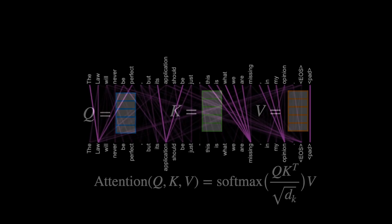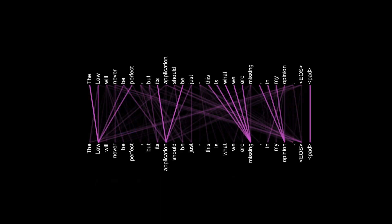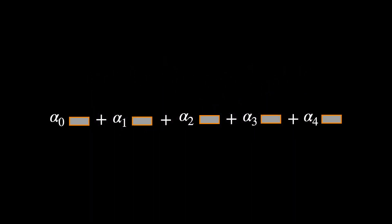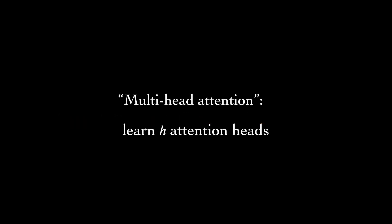One neat thing is that attention is somewhat interpretable, because we can actually look at the learned attention weights. These might correspond to the syntactic or semantic structure of a sentence. Now, if we only use a single attention head, the linear combination of value vectors leads to a kind of averaging effect that limits the resolution of the learned representations.